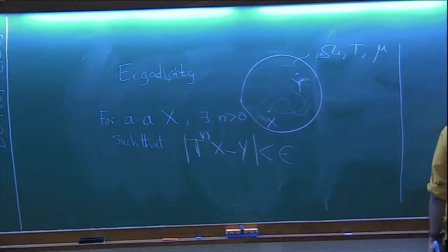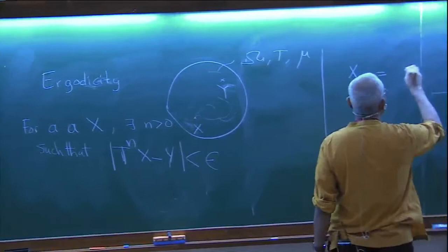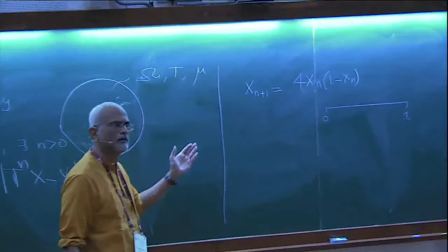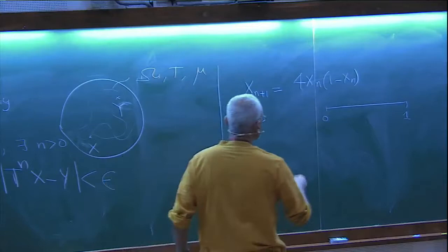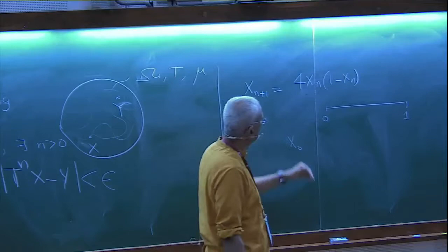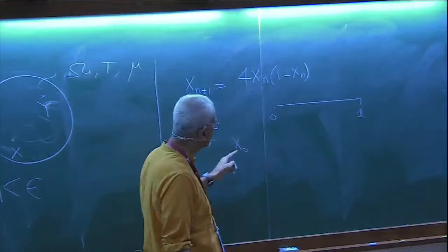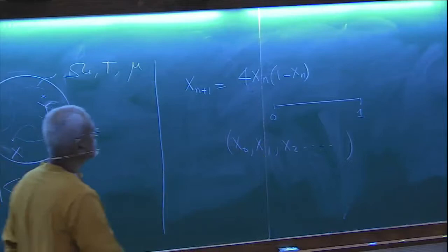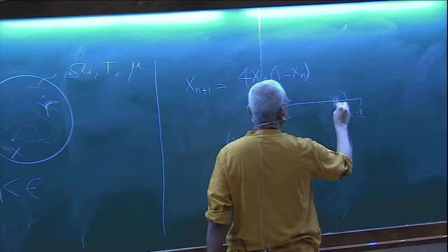As an example, let our phase space be the interval [0,1]. A famous ergodic transformation is x_{n+1} = 4x_n(1 - x_n), the logistic map at parameter 4. If you take almost any initial point x_0 and iterate it, you get an orbit x_0, x_1, x_2, ... that will come arbitrarily close to every point in the interval.